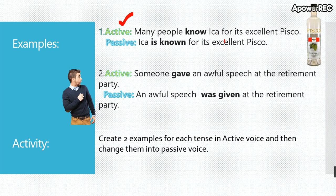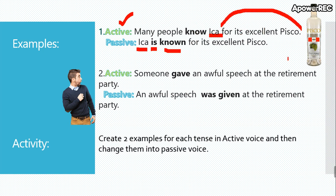Passive voice: ICA receives the action of the verb. This is simple present, so I use the auxiliary 'is'. The verb 'know' in participle is 'known'. And I copy the same part: for its excellent physical — this is the Peruvian physical.